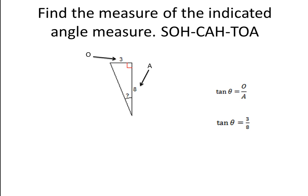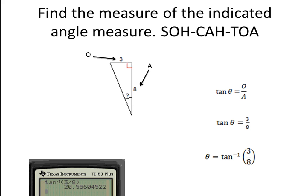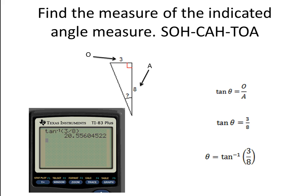To do that, we have to use the inverse tangent and put in our ratio 3 over 8. So we input inverse tangent of 3 over 8 into the calculator. And then that gives us our angle measurement of 20.556 degrees.